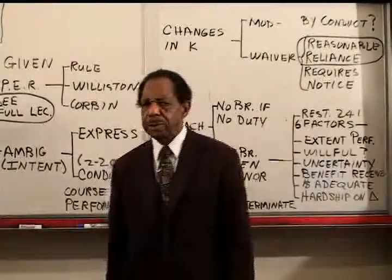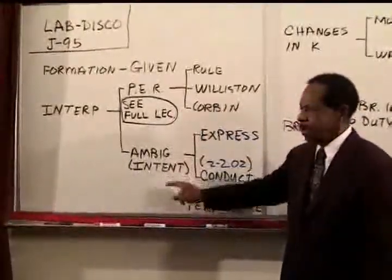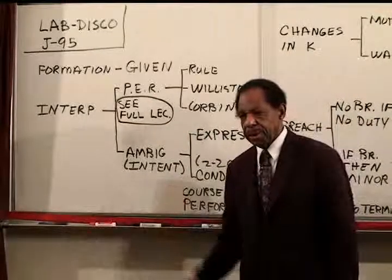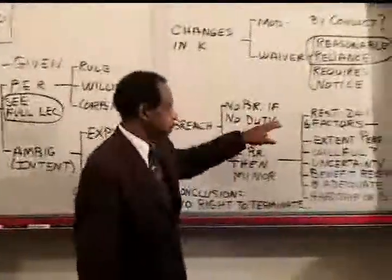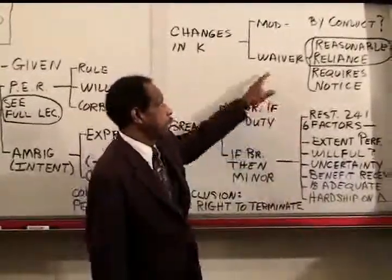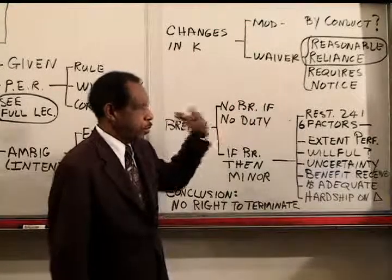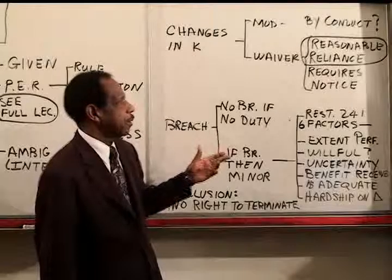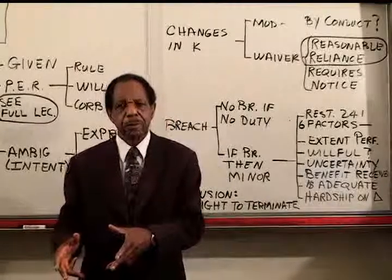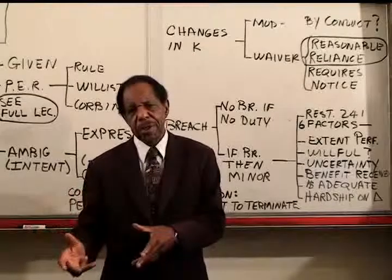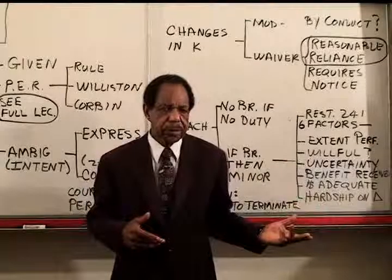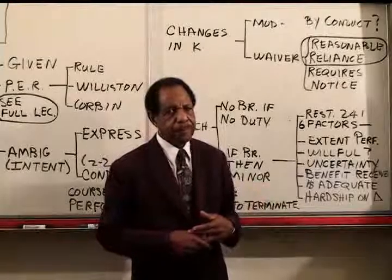The critical things to get from this problem are the parol evidence rule and ambiguity — listen to the full lecture on those two together. Also the minor breach versus material breach distinction using Restatement 241. And the waivers: if Disco was obligated to pick up on holiday weekends and four times in a row didn't do it, those look like waivers by Lab. If you're going to waive that often and the other party relies on that, you've got to give them notice if you want to revoke the waiver. That's the end of this lecture.